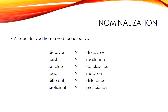A nominalization is a specific type of abstract noun — it's when you take a verb or an adjective and convert it into a noun, making an action or description into a thing. The verb 'discover' creates the noun 'discovery.' The verb 'resist' creates 'resistance.' The adjective 'careless' becomes 'carelessness.' The verb 'react' becomes 'reaction.' The adjective 'different' becomes 'difference,' and 'proficient' becomes 'proficiency.' So instead of saying someone is careless or proficient, you could say they possess carelessness or they possess proficiency.